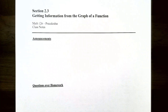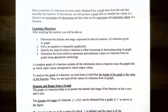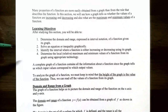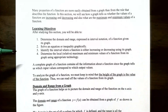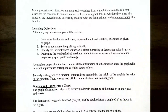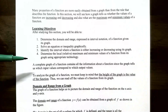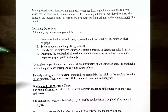Hi everyone, it's Professor Pemberton, and in this video we're going to continue talking about getting information from the graph of a function. In the previous video we talked about how to find the domain and range when you're given the graph of a function, and also how to solve an equation or inequality graphically. In this video we're going to talk about how to identify an interval where a function is either increasing or decreasing using only its graph, and then also determine the local or relative maximum and minimum values of a function from its graph and also using technology.